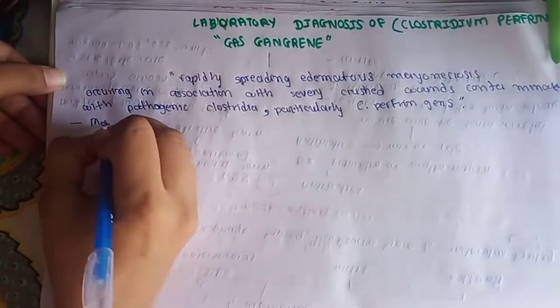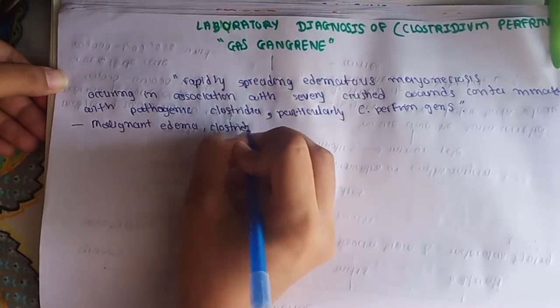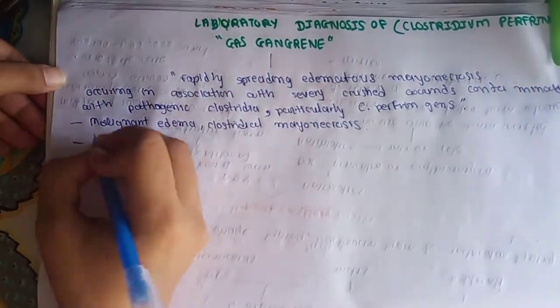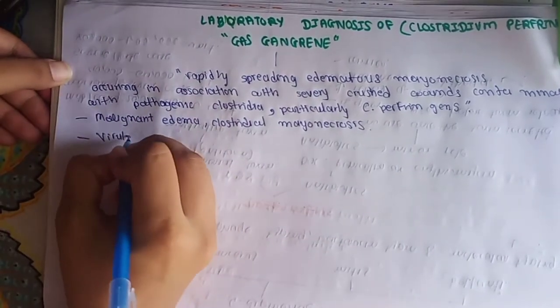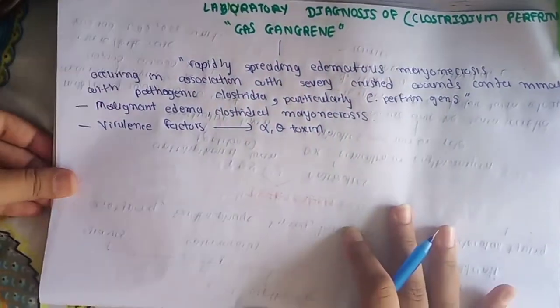This gas gangrene is previously known as malignant edema or clostridial myonecrosis. The virulence factors of gas gangrene are alpha toxin and theta toxin produced by the clostridial species.